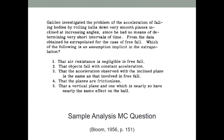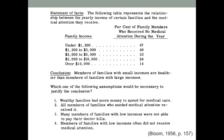Here's an example multiple choice question written at the analysis level. Galileo investigated the problem of the acceleration of falling bodies by rolling balls down very smooth planes inclined at increasing angles, since he had no means of determining very short intervals of time. From the data obtained, he extrapolated for the case of free fall. Which of the following is an assumption implicit in the extrapolation? Here's another example: a table represents the relationship between the yearly income of certain families and the medical attention they receive, and a person concluded that members of families with small incomes are healthier than those with large incomes. The student is asked which of the following assumptions would be necessary in order to justify this conclusion. You could make it free response by having students write an essay, but nonetheless this is an analysis-level question.